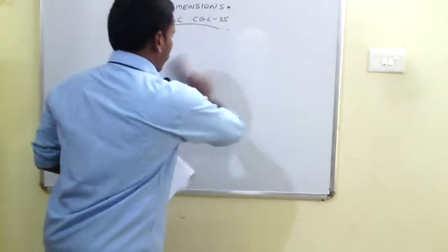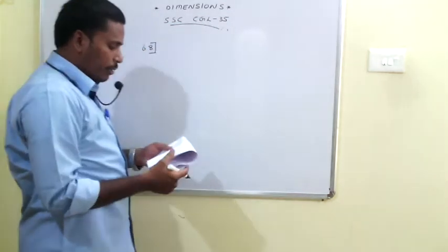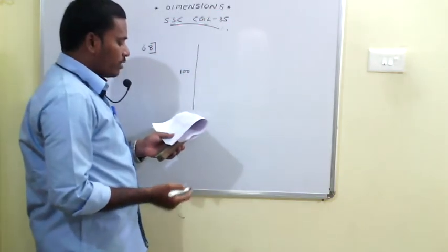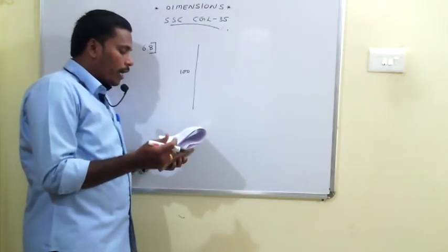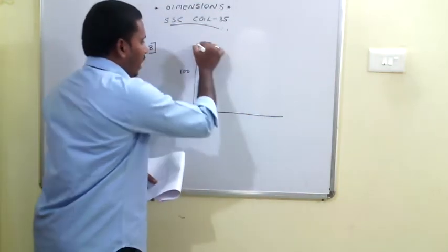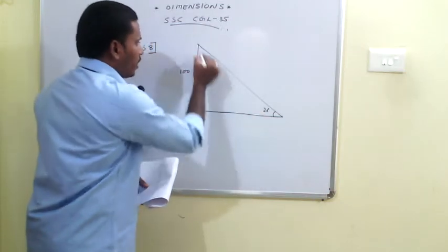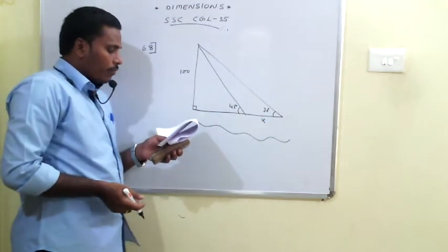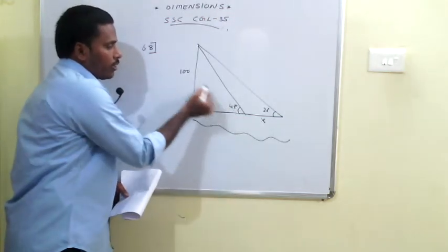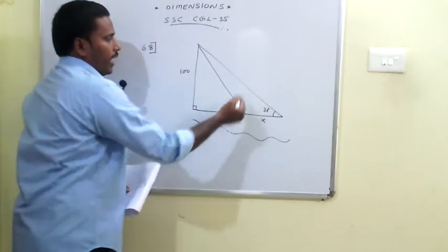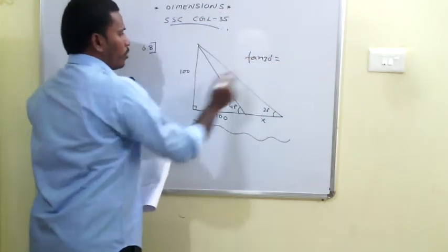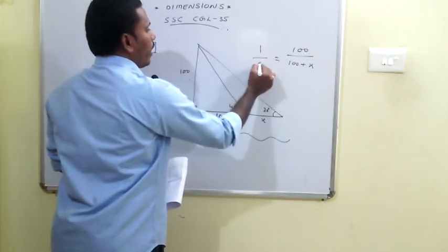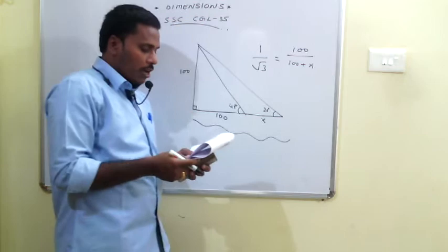The 68th problem: a tower is 100 meters tall. When the angle of elevation of the sun changes from 30° to 45°, the shadow becomes X meters less. At 45°, the shadow length equals 100 meters. Applying tan 30° = 100/(100 + X), and since tan 30° = 1/√3, solving gives the value of X.